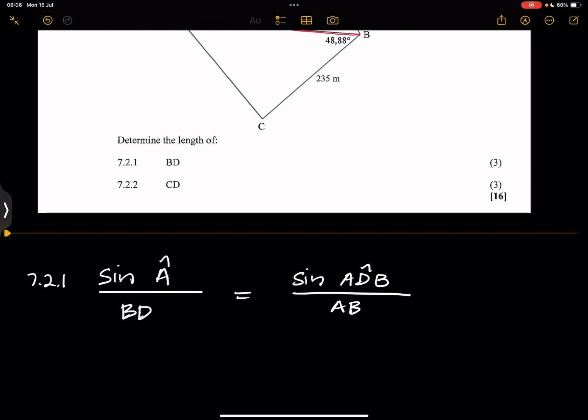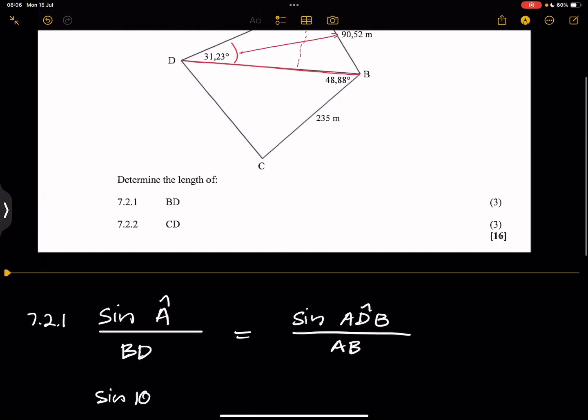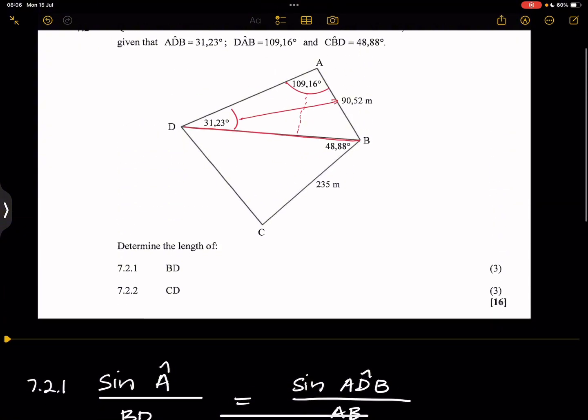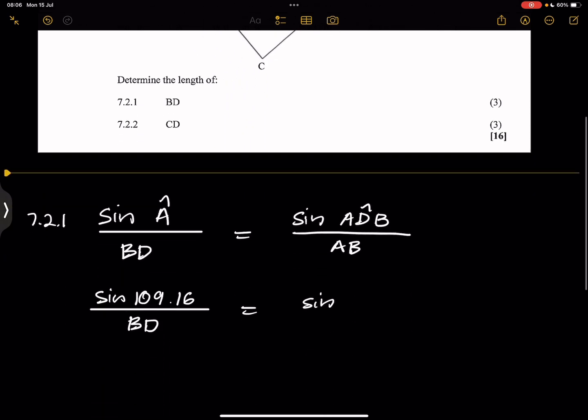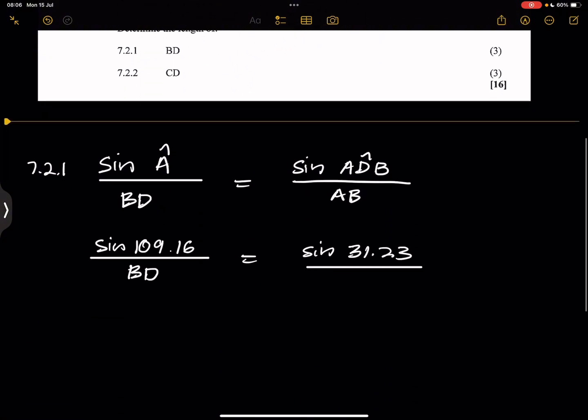Now, notice, ladies and gents, so all we're going to do is substitute. First, the sine of A, our angle A is 109.16, divided by the side we are looking for, which is BD, is equal to the sine of ADB, which is 31.23. So this is 31.23 divided by the side AB. Remember, we are given that it's 90.52.